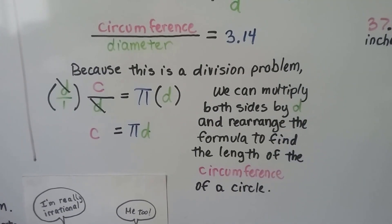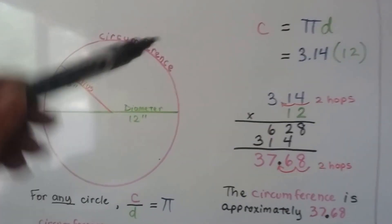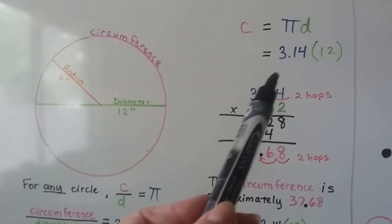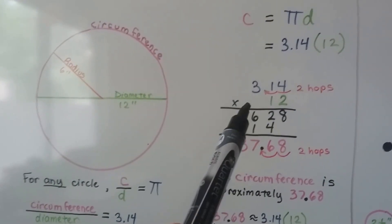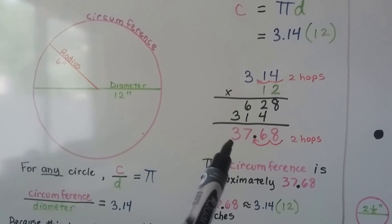So what we get is the circumference equals pi times the diameter. That means it's going to equal 3.14 times that 12. And we multiply 3.14 times 12, and we get 37.68.